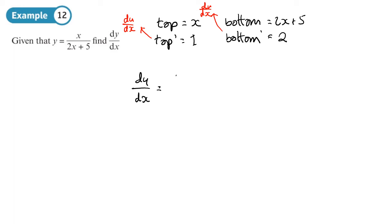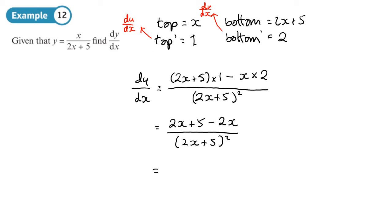So dy/dx: we start with the bottom, which is 2x plus 5, that gets multiplied by top dash which is just one, then minus - we always got a minus there - then we go to the top, multiply by the bottom dash, divided by the bottom squared, so (2x + 5)². Tidying that up we have 2x plus 5 minus 2x all over (2x + 5)², so that simplifies to 5 over (2x + 5)². It's often useful to factorize any answers in case you need to identify and find any turning points.